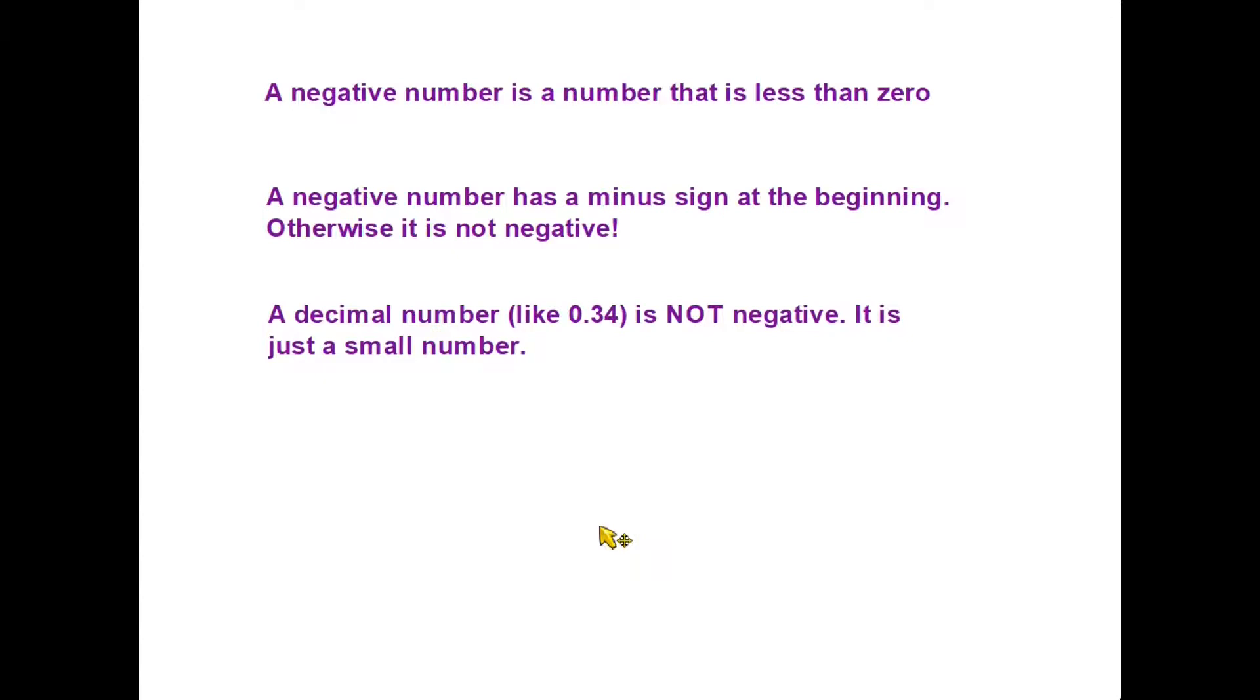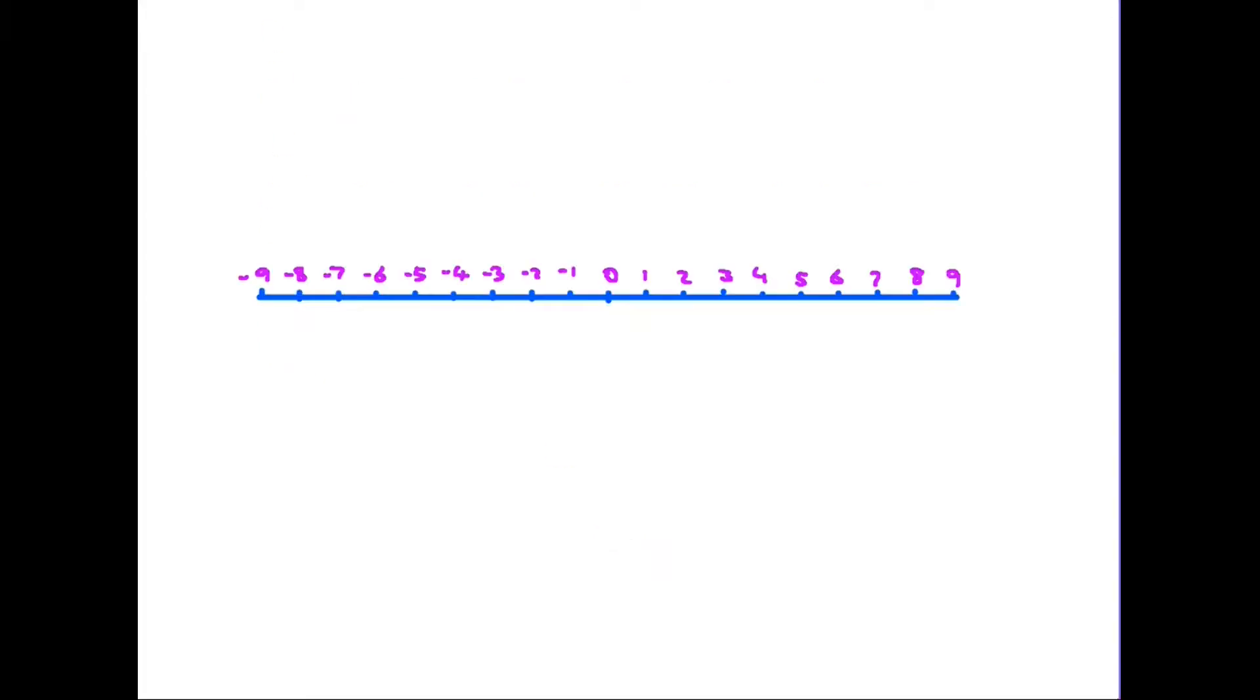The diagram we have here is known as a number line, and it's a quite useful little tool to help us understand how minus numbers work. So you can see right in the very center here we have zero, and on the right hand side numbers go up as you would expect: one, two, three, four, and so on. On the other side is where the numbers are going in the opposite direction, and they are going one, two, three, four, five, but of course these are the minuses.